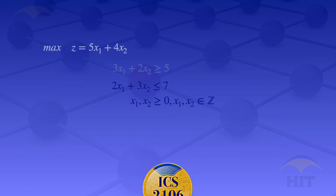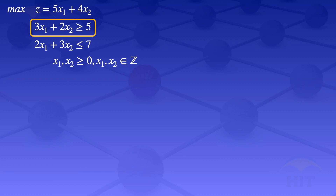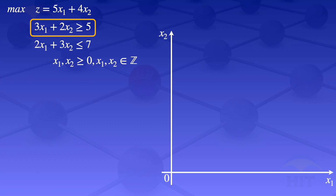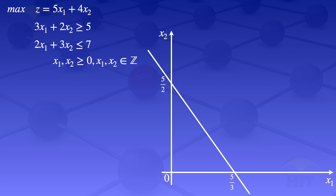To solve this problem we are going to use the graphical method. I'll draw the horizontal axis labeled 0 and x1, and the vertical axis labeled x2. The intercepts of the first constraint line are 5/2 and 5/3, and I join them to draw the line. Then for the second constraint 2x1 plus 3x2 less than or equals to 7, the intercepts are 7/3 and 7/2, and I join those two.